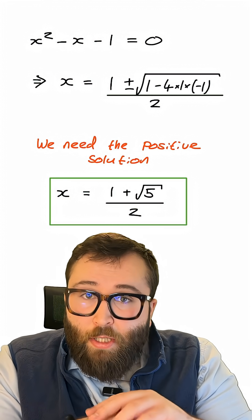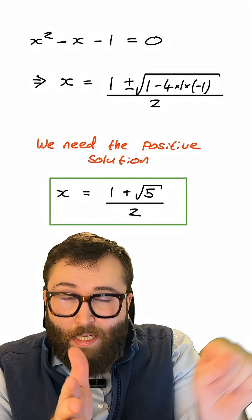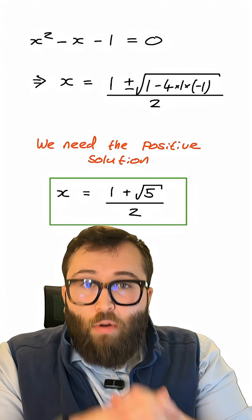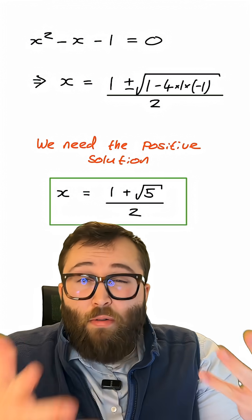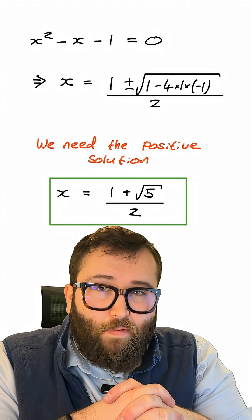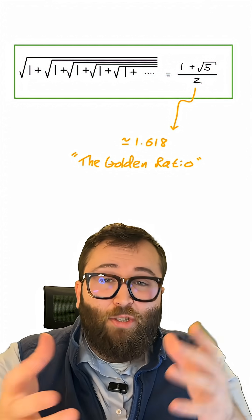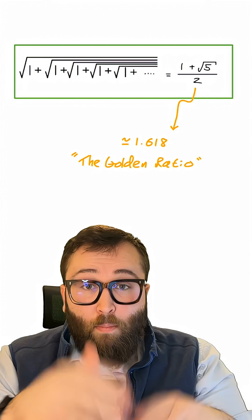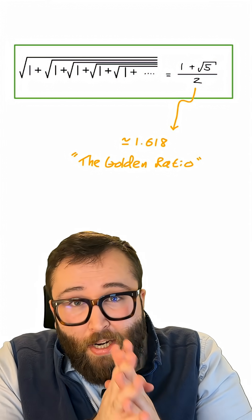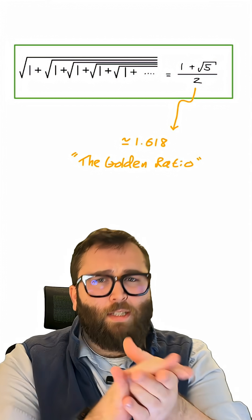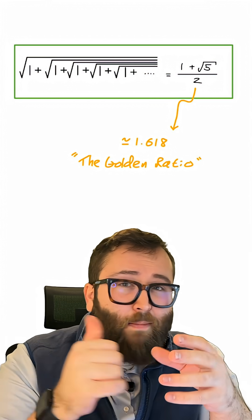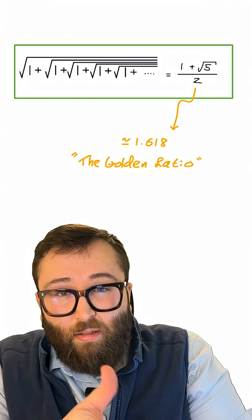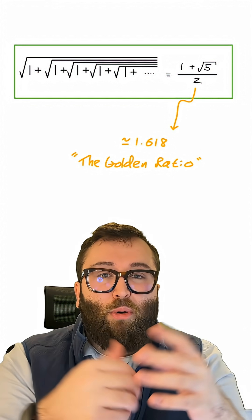Now, we only needed to take the positive solution here, because as we were dealing with the arithmetic operation square rooting, which by definition is positive, we only have to take the positive root, because we know that our overall answer is going to be a positive number. So this is what our infinite nested square root equals, 1 plus the square root of 5 over 2, or about 1.618, but more commonly we call this number the golden ratio, and it's extremely important in mathematics. It's an irrational number, it's got deep links with fractals and Fibonacci sequences, and even quasi-crystals in physics, it's an extremely important number.